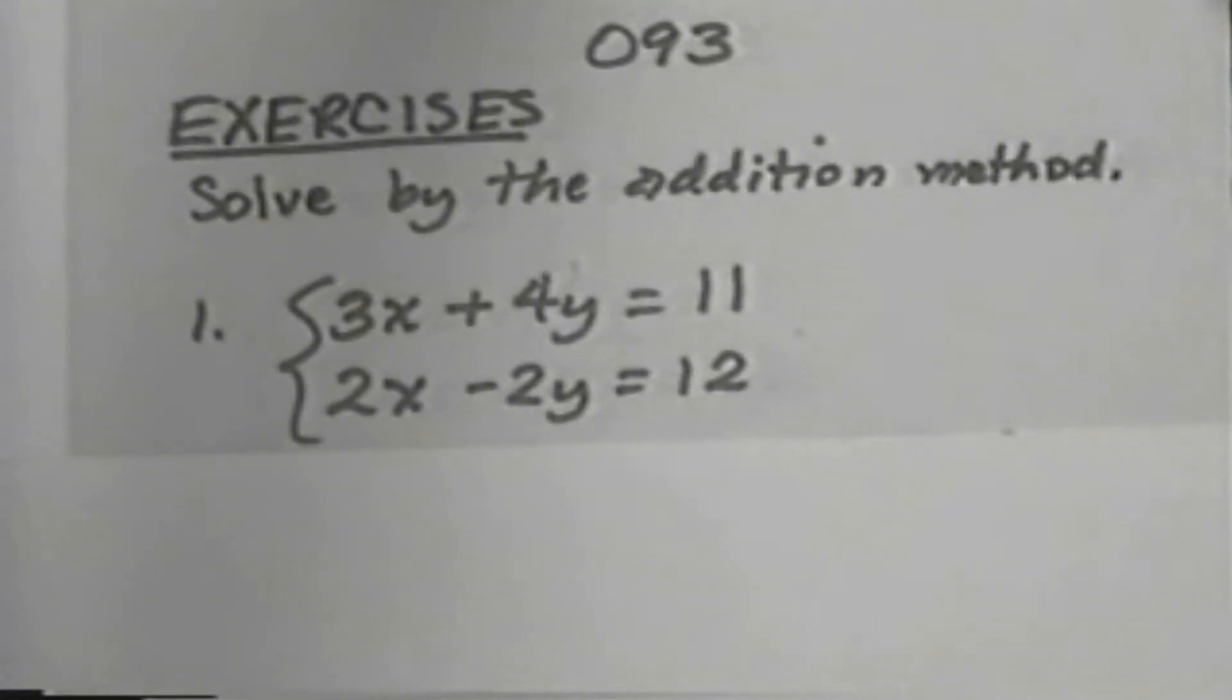Exercise 1 is the system: 3x plus 4y equals 11, 2x subtract 2y equals 12.